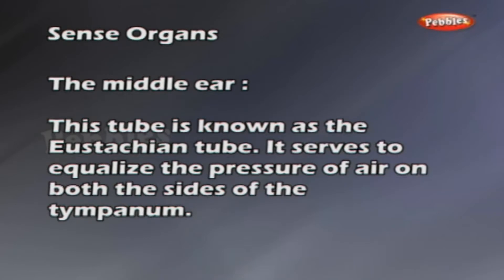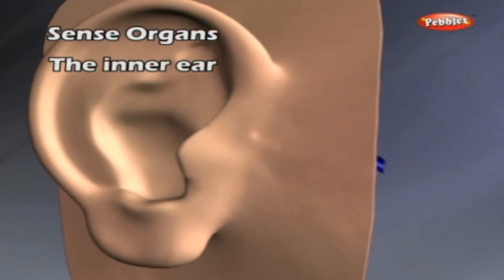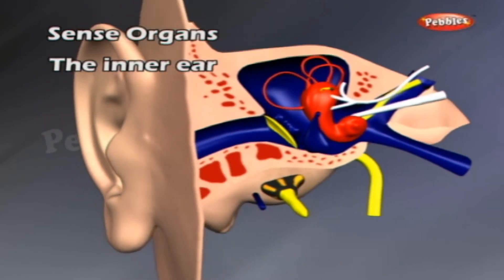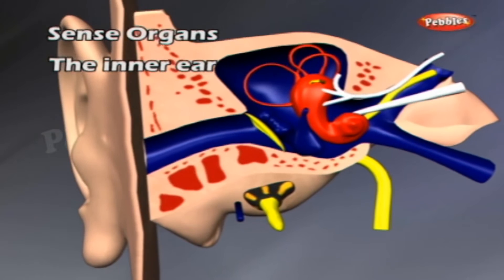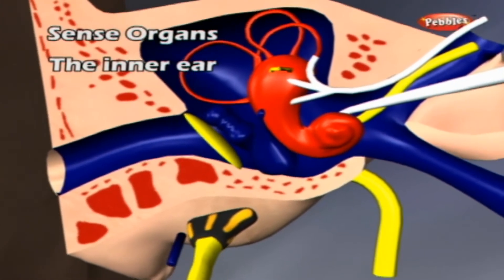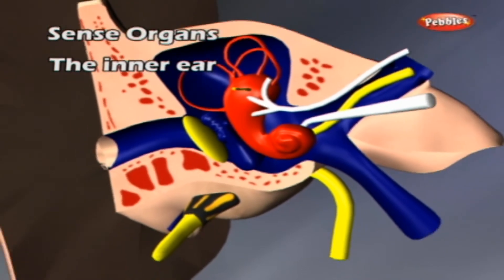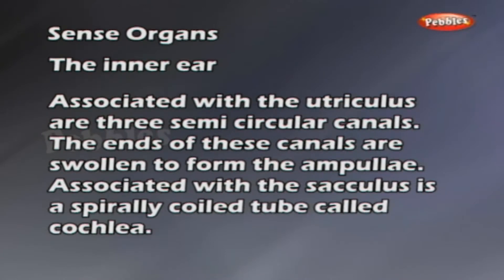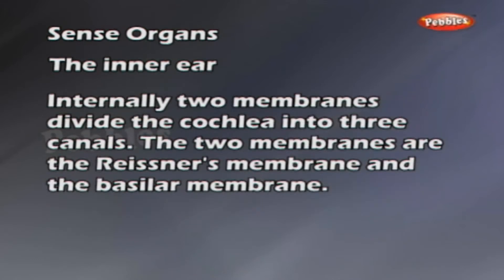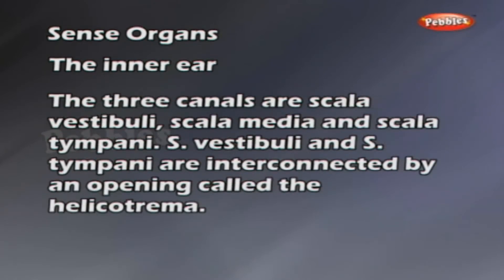The inner ear lies in the bony labyrinth of the skull. It consists of a membranous labyrinth with two sac-like organs called utriculus and sacculus. Associated with the utriculus are three semi-circular canals. The ends of these canals are swollen to form the ampullae. Associated with the sacculus is a spirally-coiled tube called the cochlea. Internally, two membranes divide the cochlea into three canals: the Reissner's membrane and the basilar membrane. The three canals are scala vestibuli, scala media, and scala tympani.